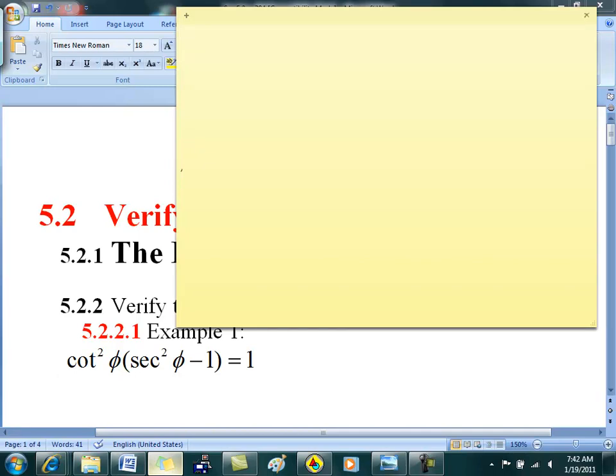Number 9 on page 357? Okay, that's a good question. So use the given value to evaluate if possible all six trig functions. And my assumption is you're going to use trig identities. So number 9 on page 357.